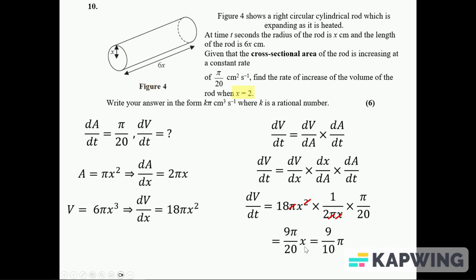And I end up with 18 over 40 again, 9 over 20 times π times x. And sticking in x equals 2, I get nine-tenths π.